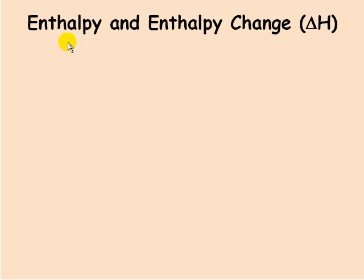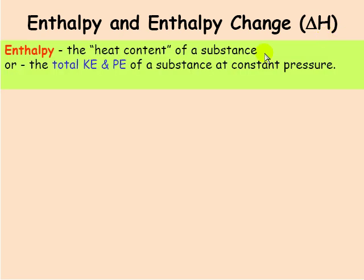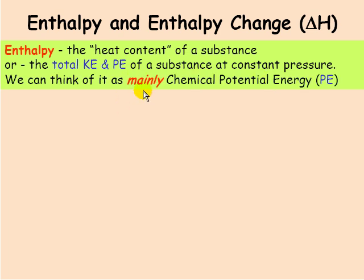This video is about enthalpy and enthalpy change, or delta H. If you look up enthalpy, there are a couple of different definitions for it. One calls it the heat content of a substance — having a high heat content doesn't necessarily mean it's hot; it means the potential to produce heat. Another definition is the total kinetic and potential energy of a substance at constant pressure. In this course, we can think of enthalpy mainly as chemical potential, or stored energy.